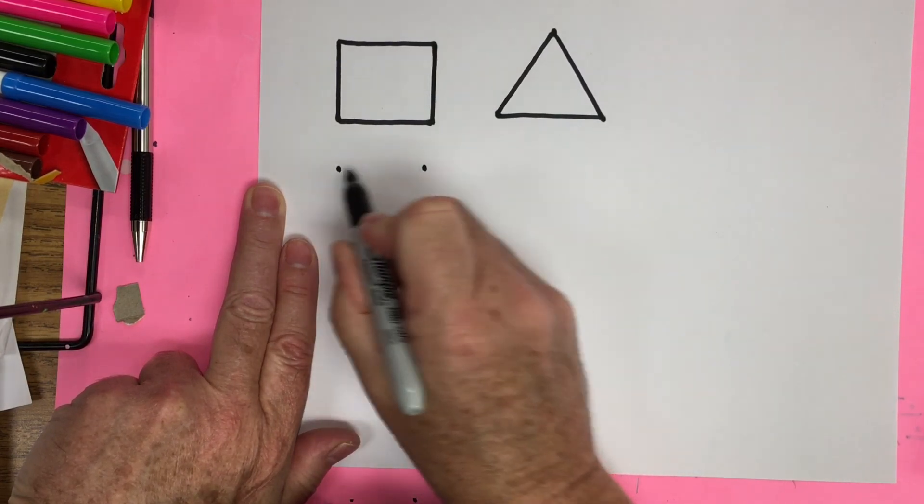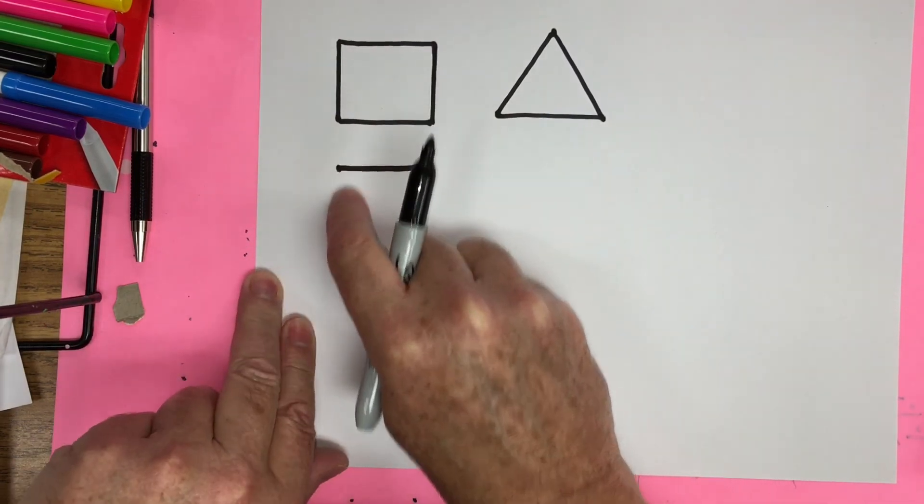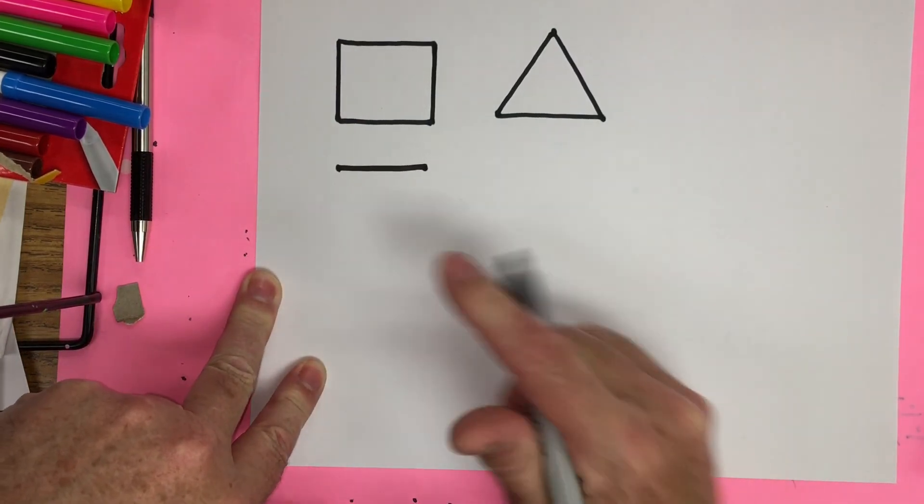So we're going to make two dots, connect. Now the long side, it can be either long this way or long this way, but for today we're going to make it long coming down.